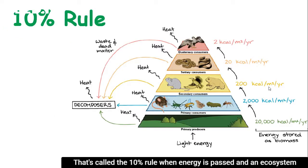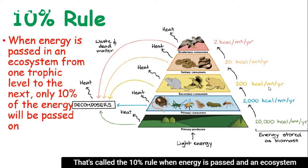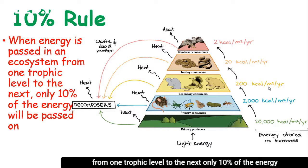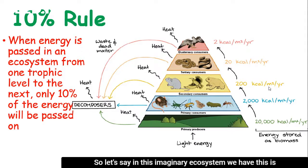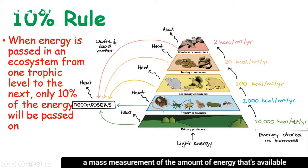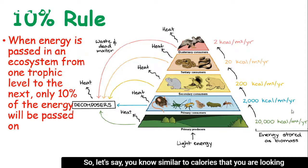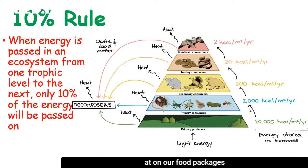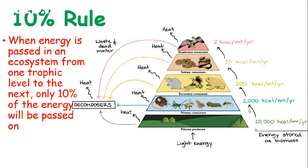That's called the 10% rule. When energy is passed in an ecosystem from one trophic level to the next, only 10% of the energy will actually be passed on and available. This measurement represents the amount of energy available within a particular organism or trophic level — similar to calories that you look at on food packages.